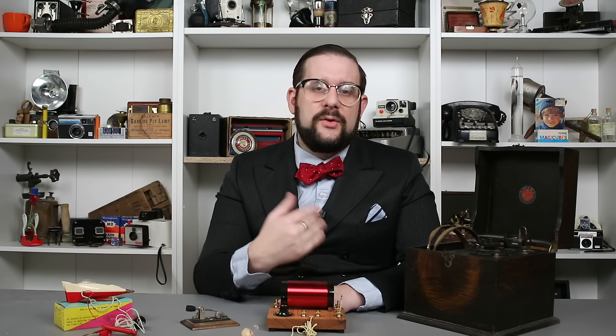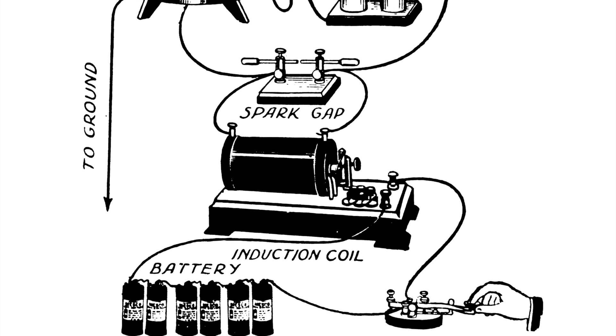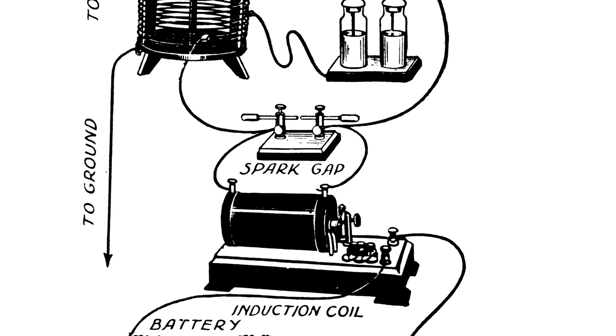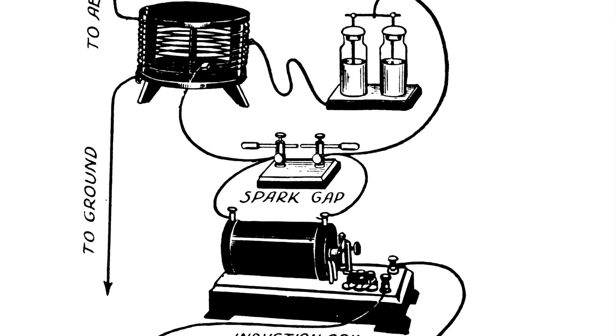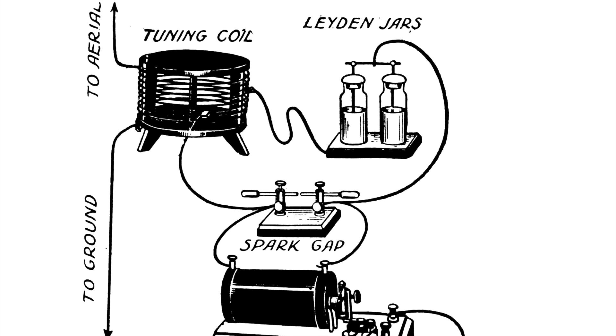However, the signals sent by these early transmitters were very noisy, very broad spectrum, and very low power, meaning that only one transmitter could be used within a certain area at any one time, and the signals couldn't travel very far. So later inventors added a capacitor to the circuit, turning it into a tuned resonant circuit that could be tuned to a much narrower band of frequencies, allowing for multiple transmitters to operate in the same area, and the signals to carry farther.